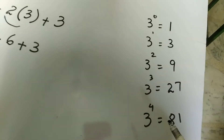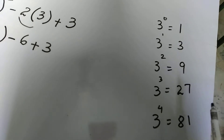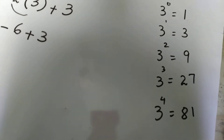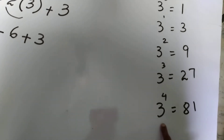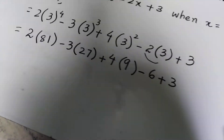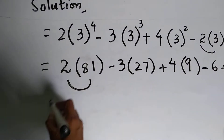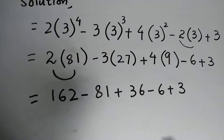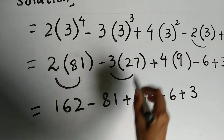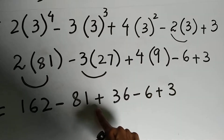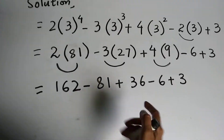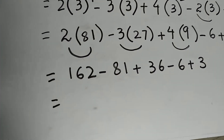Let's check the powers of 3: 3 to the power 0 is 1; 3 to the power 1 is 3; 3 squared is 9; 3 cubed is 27; 3 to the power 4 is 81. Now we multiply: 2 times 81 gives 162, then minus 3 times 27, then plus 4 times 9, then minus 2 times 3 gives minus 6, plus 3.